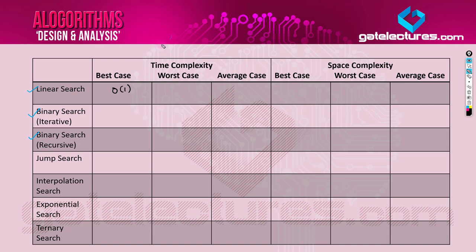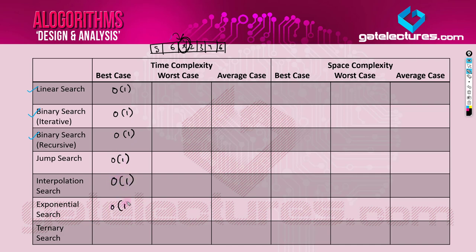Searching is done on an array — for example, an array with elements like 5, 6, X, 2, 3, 4, 6 — and you need to find element X. The best case is the minimum time required: when you find the element at the very first attempt. This best case of O(1) applies to every searching algorithm, whether it is linear search, binary search, recursive or non-recursive, jump search, interpolation search, exponential search, or any other — because you found the element exactly at the first time you started searching.